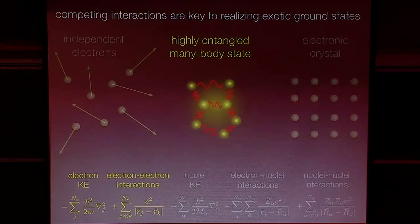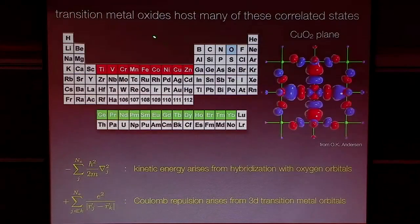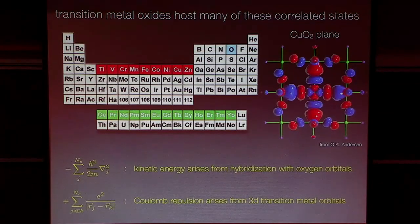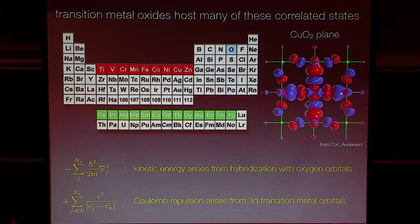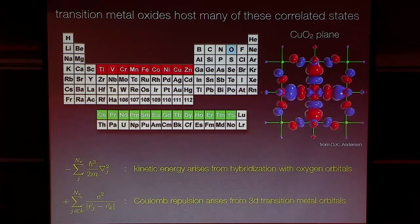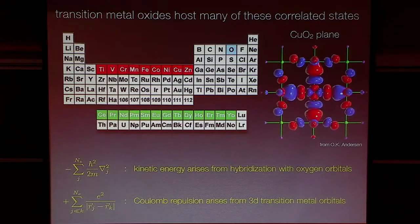What we really want are material systems where these two interactions are more or less balanced, and there's a large family of systems where this is the case: the so-called transition metal oxides. There was a question about why we're not throwing away the electron-lattice interaction. Usually that's not as large an energy scale as the electron kinetic energy, which is on the order of electron volts, while electron-phonon interactions are in the 50 to hundreds of millielectron volts range. But as I'll show in a few slides, there are systems where the low-energy physics is dominated by electron-phonon interactions, and I'll show how we can use photoemission to directly probe those.